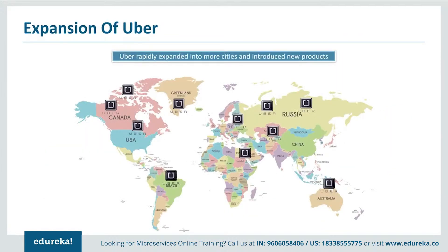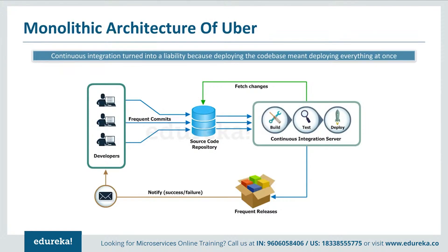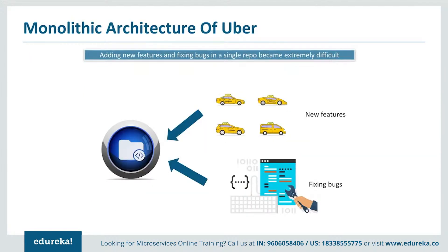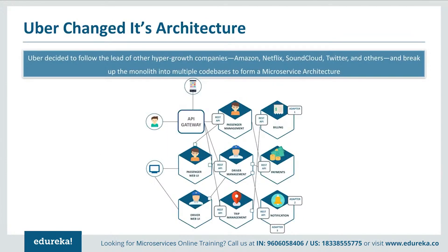Having one codebase seemed clean at that time and solved Uber's core business problems including connecting drivers with riders, billings, and payments. But as Uber started expanding worldwide into many more cities, it continuously faced problems of scalability and continuous integration. Developers could not continuously build, test, deploy, and release software frequently as Uber expanded city-wise. Adding new features and fixing bugs in a single repository became extremely difficult. So Uber decided to follow the lead of hypergrowth companies like Amazon, Netflix, SoundCloud, and Twitter, and broke down its monolithic framework into multiple codebases to form a microservice architecture.